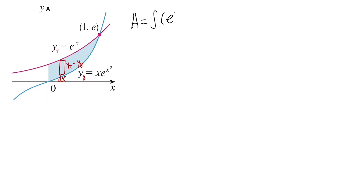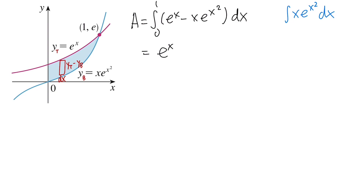The bottom function is x·e^(x²). Let's set up the integral: we have e to the x minus x·e to the x squared, dx, with x going from 0 to 1. Integrating e to the x gives e to the x. For the integral of x·e^(x²) dx, let's do a u-substitution on the side: let u equal x squared, so du equals 2x dx, which gives dx equals du over 2x.